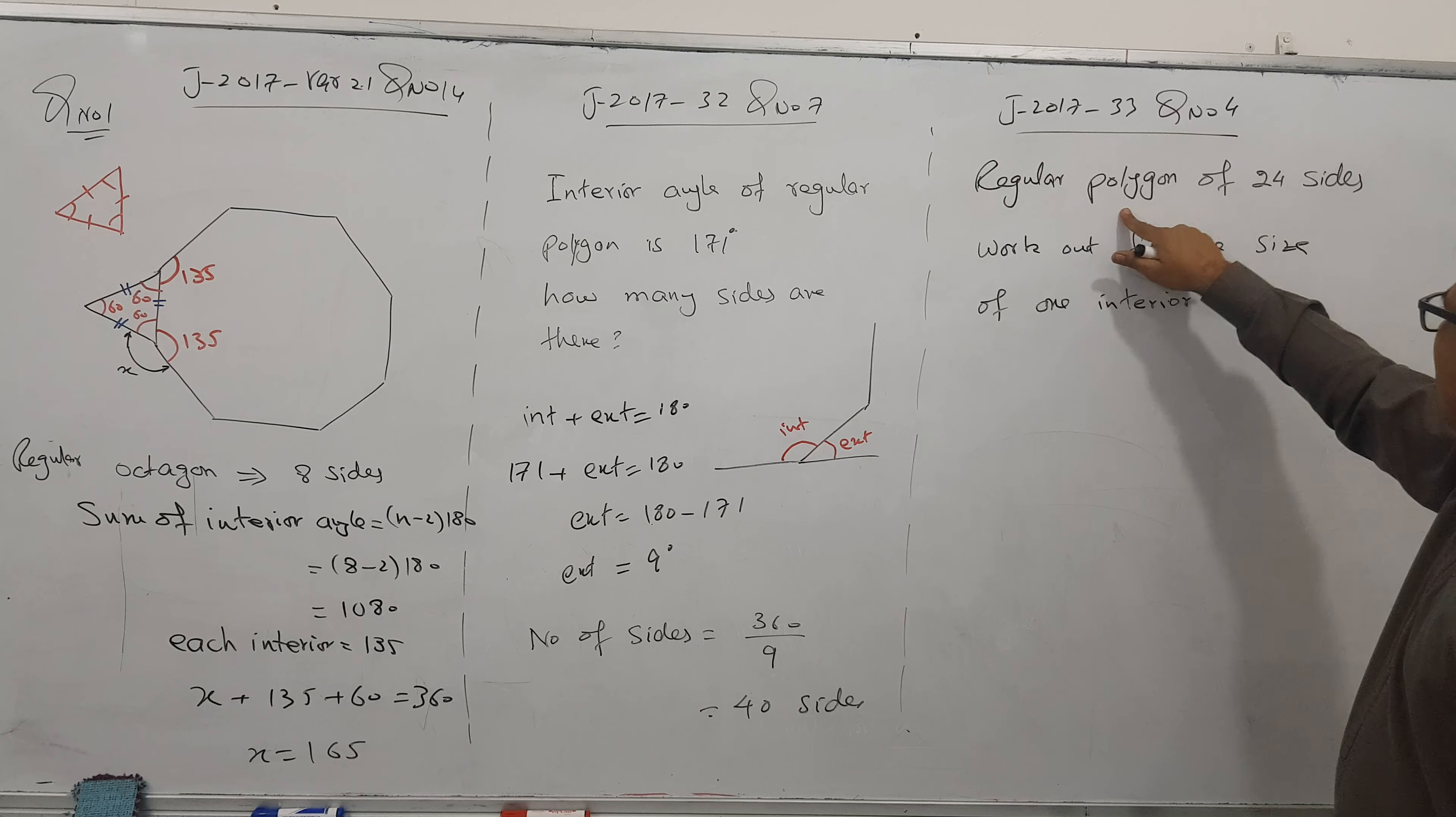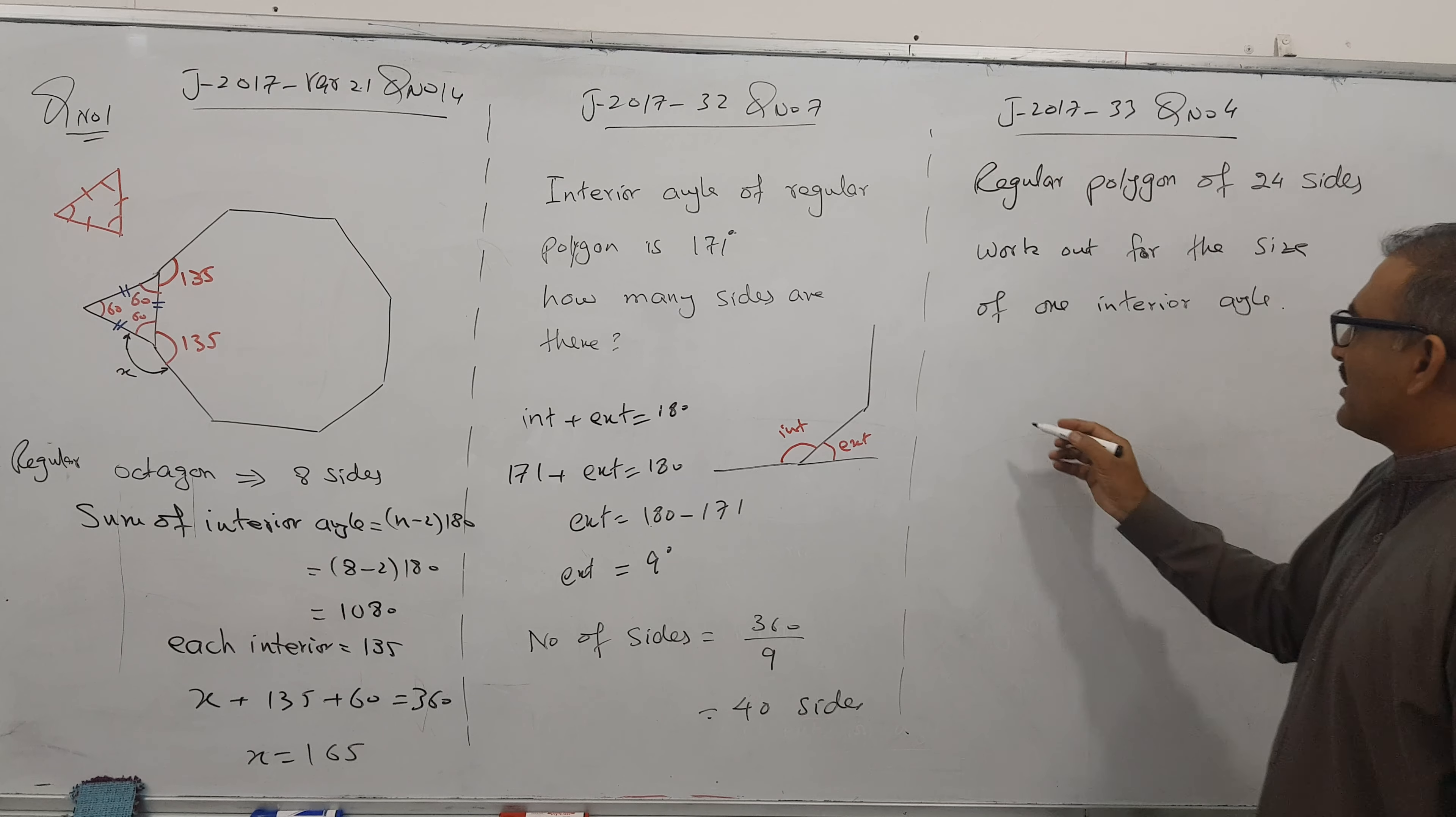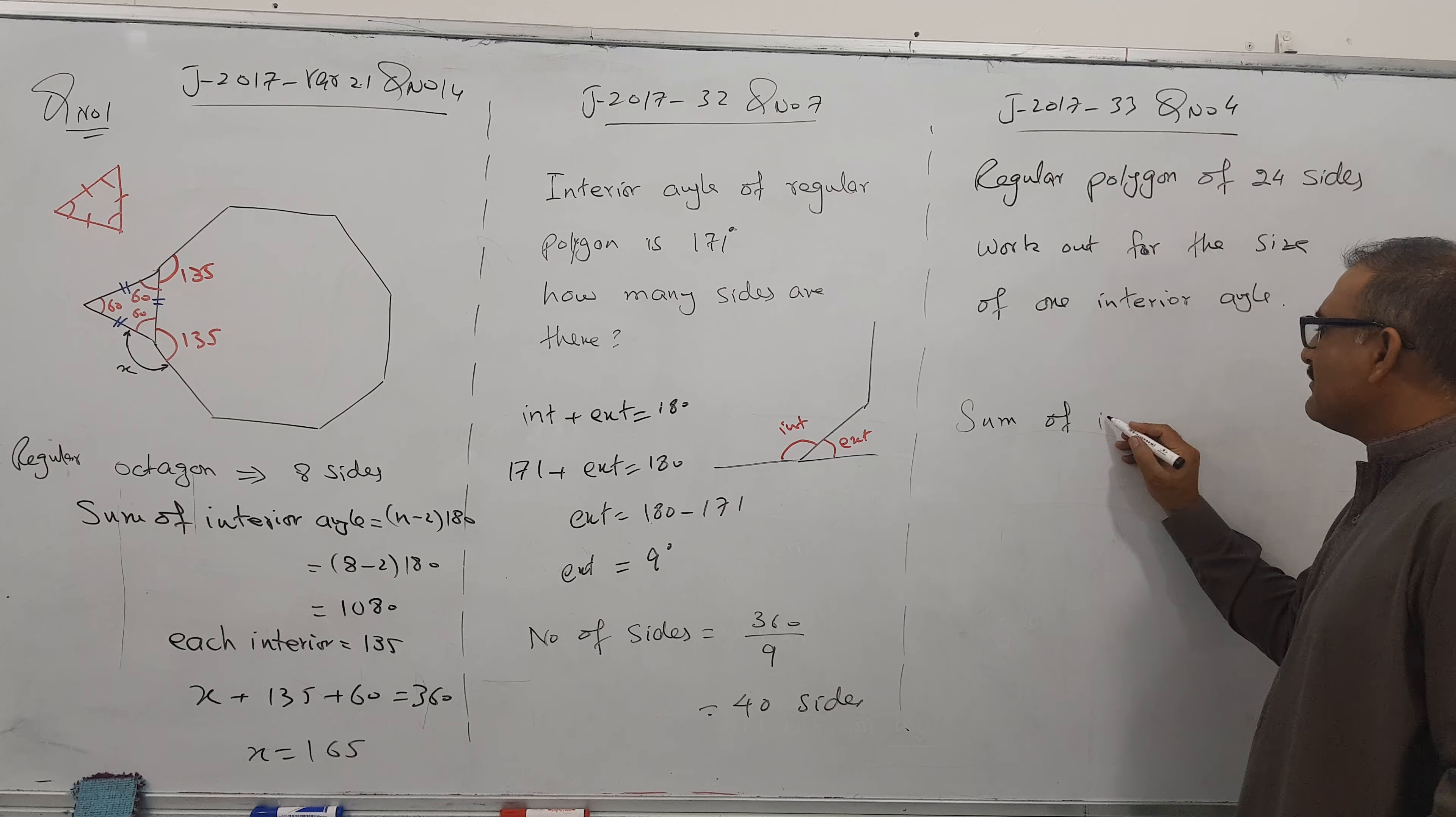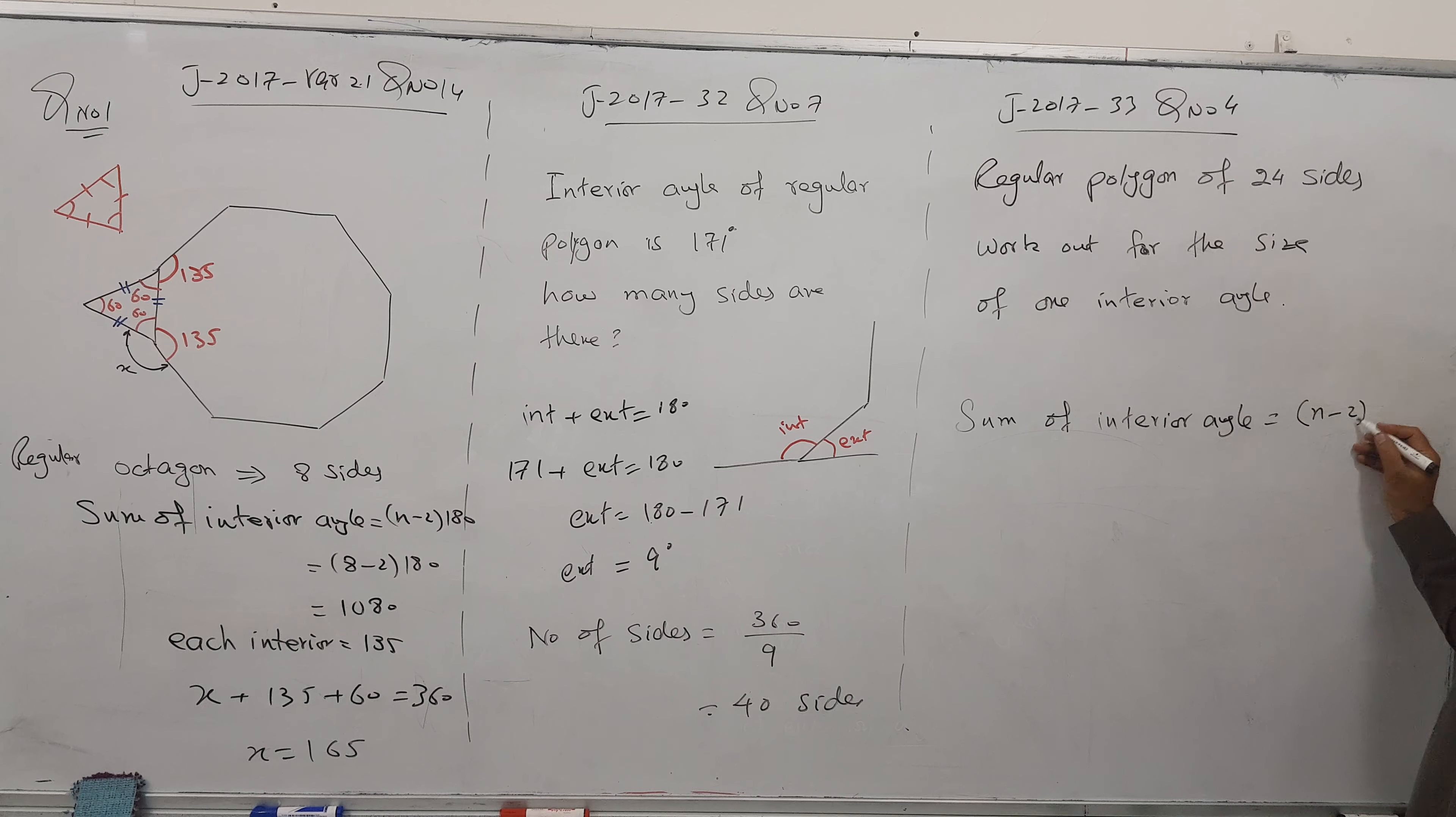Come on to this question. He's asking: regular polygon of 24 sides, work out the size of one interior angle. Easy, because we have a formula. What is the formula? We have two formulas - one direct formula and one step by step. I'll do step by step. Sum of interior angles: n minus 2 into 180. Put 24 here.